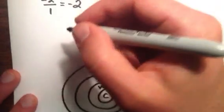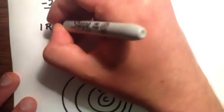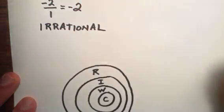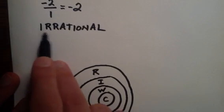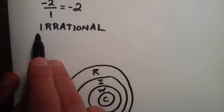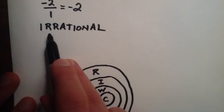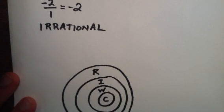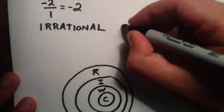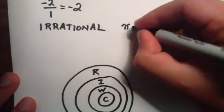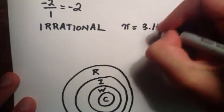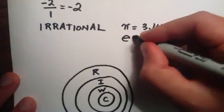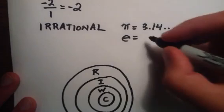The next type of number is the irrational number. Now, kind of like the name suggests, irrational basically means not a ratio. It cannot be written as a ratio of two integers. So some examples of irrational numbers are pi, which is 3.14, and so on.